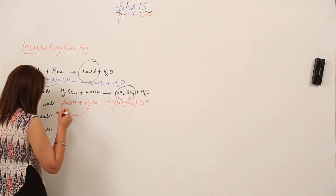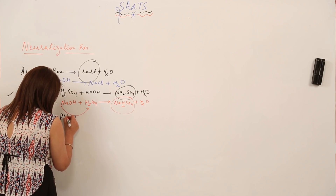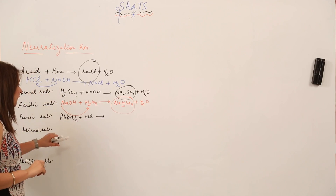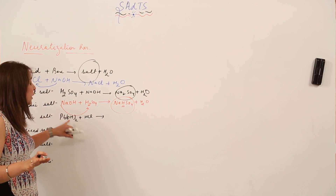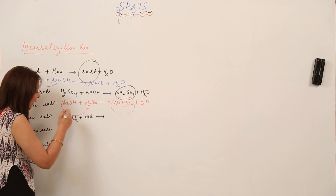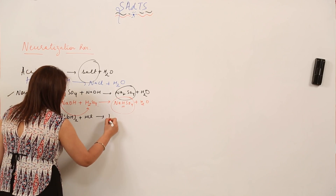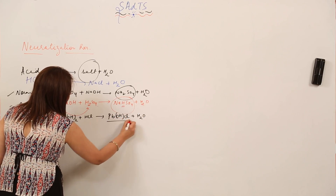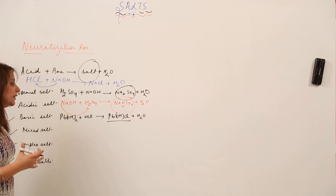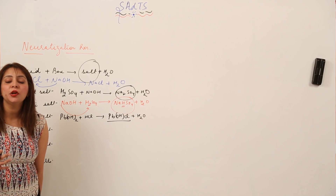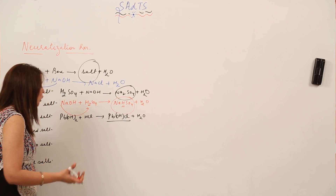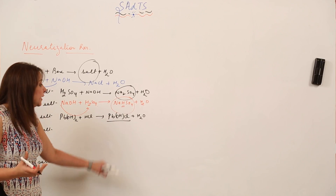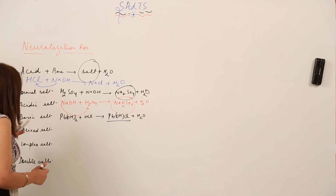When we talk about basic salt, consider a base and acid where the OH ions should be completely replaced. But if the reaction takes place such that we still see a hydroxide ion remaining in the salt, it is a basic salt, because improper replacement of the hydroxide ion has taken place. The salt retains a basic character, which is why it is called a basic salt.